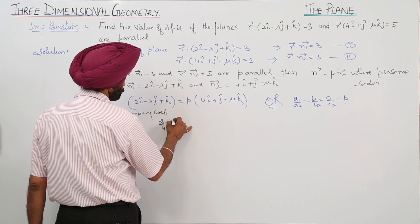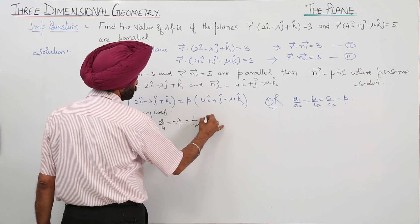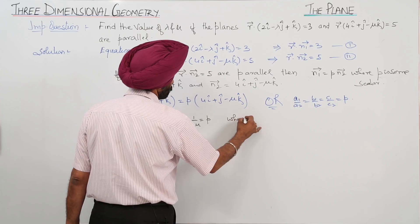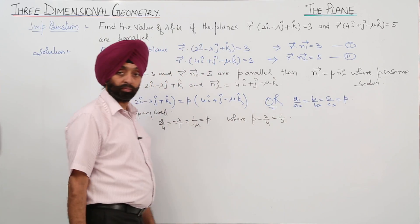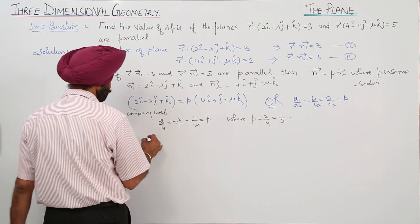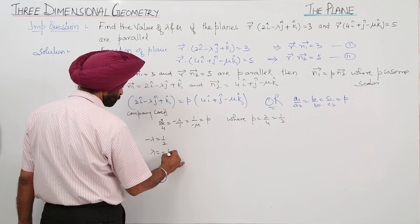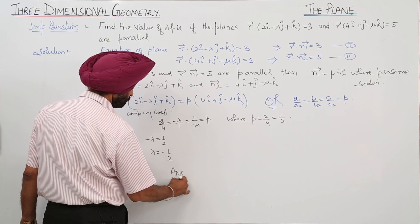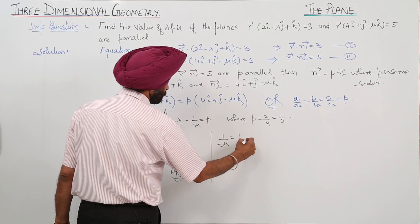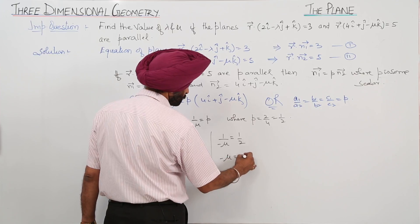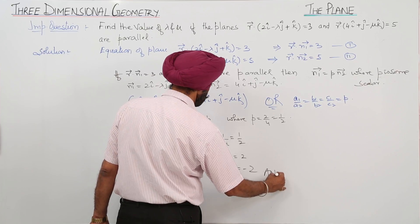Comparing coefficients: 2 upon 4 equals negative lambda upon 1 equals 1 upon negative mu equals p, where p equals 2 upon 4, that is 1 upon 2. Therefore, negative lambda equals 1 upon 2, so lambda equals negative 1 by 2. And 1 upon negative mu equals 1 upon 2, so negative mu equals 2, giving mu equals negative 2.